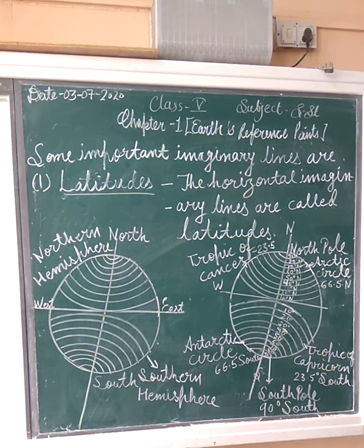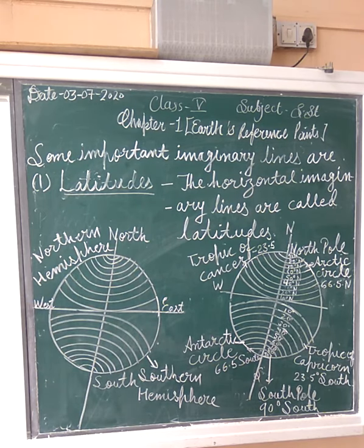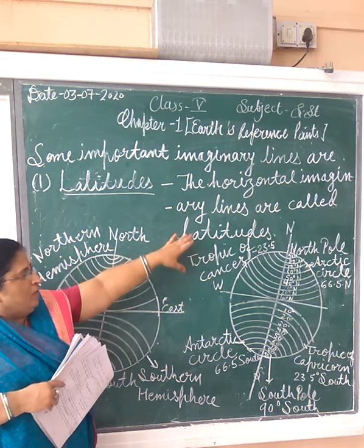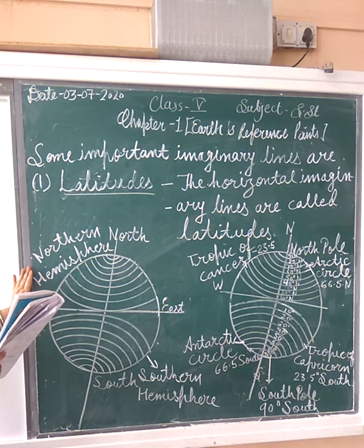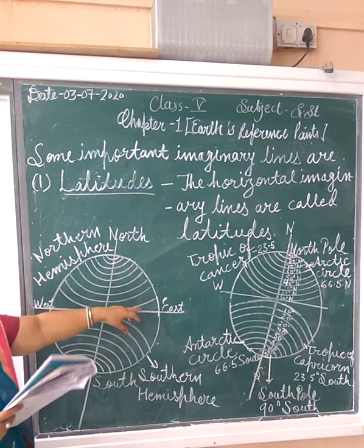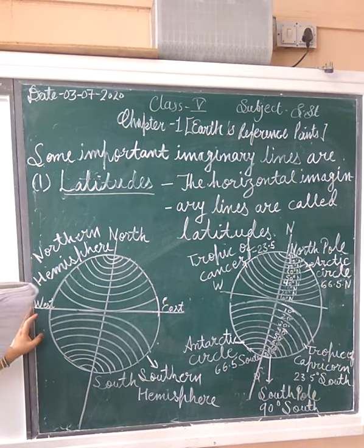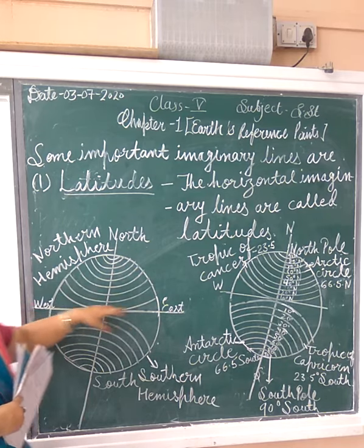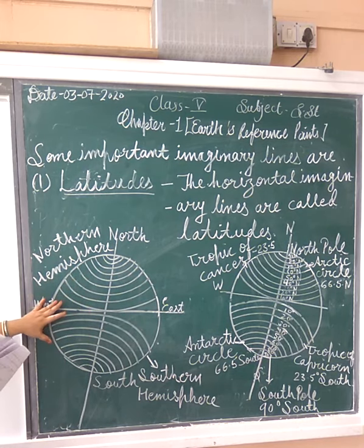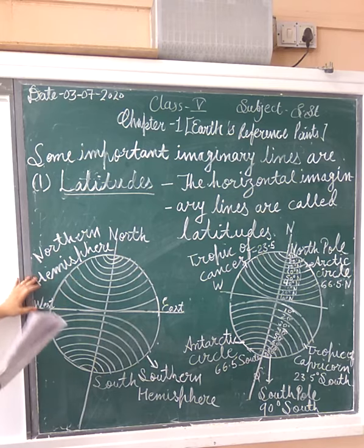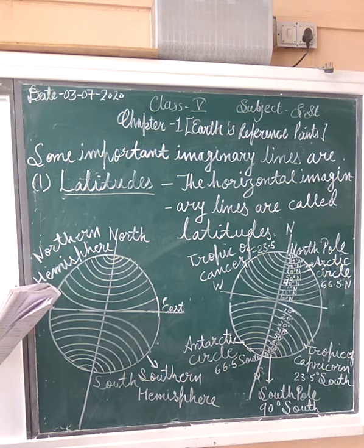Today we have discussed about latitude. Latitudes are the important imaginary lines — the horizontal imaginary lines are called latitudes and they run parallel. They are the same distance apart. They are measured from 0 degree to 90 degree. The 0 degree latitude is called the equator and it passes through the center of the globe. The equator divides our Earth into two parts — northern hemisphere and southern hemisphere.